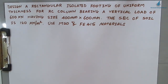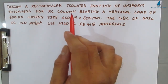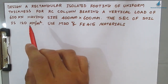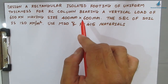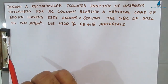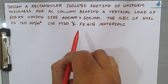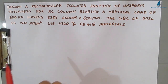Hello friends, welcome back to All About Structural Analysis and Design. In this video we will see how to design a rectangular isolated footing of uniform thickness. Today's task is to design a rectangular footing. The given problem: design a rectangular isolated footing of uniform thickness for an RC column bearing a vertical load of 600 kN, column size 400 mm × 600 mm, SBC of soil 120 kN/m², M20 concrete, and Fe415 steel.